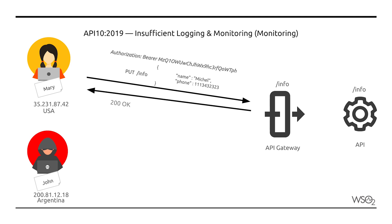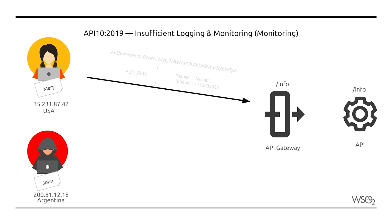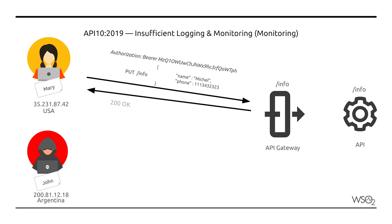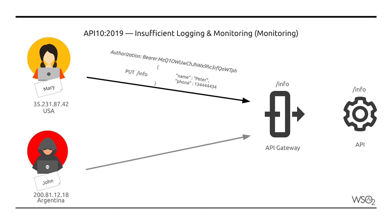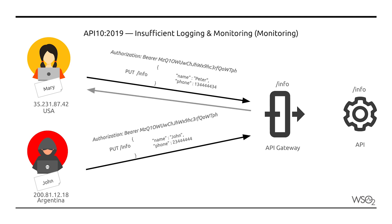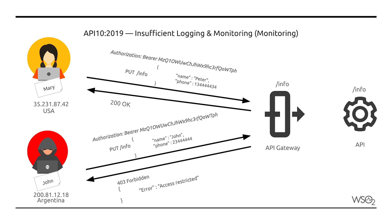John resides in Argentina. He manages to steal Mary's access token and begins to invoke the API. In this case, it is recognized that instead of Mary's US IP address, an IP address from Argentina is submitting the API calls. The API gateway flags this as suspicious activity and blocks the requests made by John, then informs an administrator so that the appropriate action can be taken.